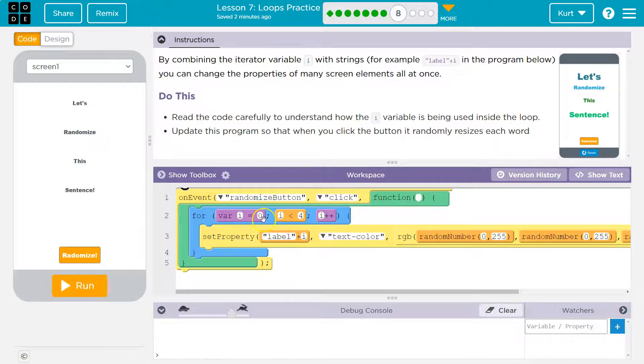Label plus i, i is 0. Label plus 0, so that would be a string, because this is in quotes. So label 0's text color is going to be a random text color, RGB, red, green, blue, and this is the amount you could think of like pigment, 0 to 255. So it's going to pick a random color. Hits the bottom and goes, i plus plus. So i used to be 0, so I have to add 1, because it's i plus plus. So 0 plus 1, so i is now equal to 1. Is 1 less than 4? True, it says, yes.